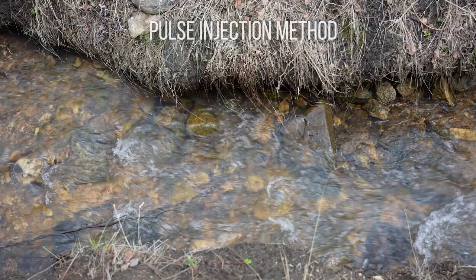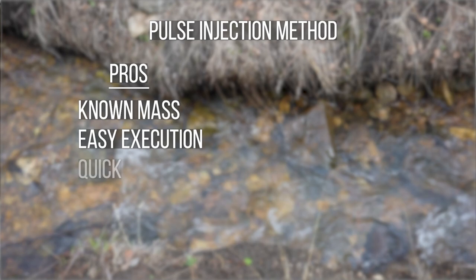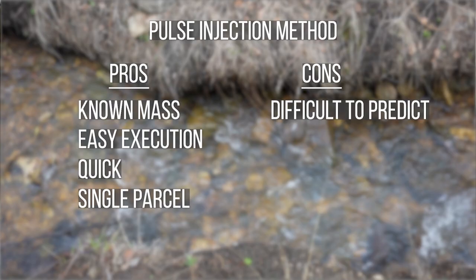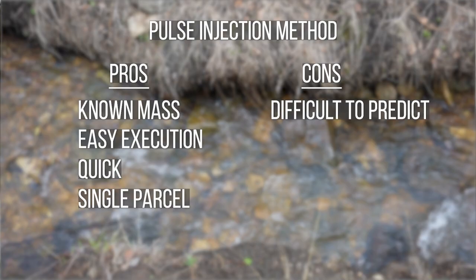Here are a few pros and cons for each method. The pros of the pulse injection include: we have a known mass that's injected, it's easy to execute — we just mix and pour — it's a fairly quick technique, and we label just a single parcel of stream water. The cons of the pulse injection method include: peak concentration and timings at downstream locations can be difficult to predict. Thus, a tracer can move faster than expected and it can be difficult to keep up with reasonable sampling rates to sample the breakthrough curve adequately. In addition, the technique labels only a single parcel of stream water, which may not help you achieve your objective.